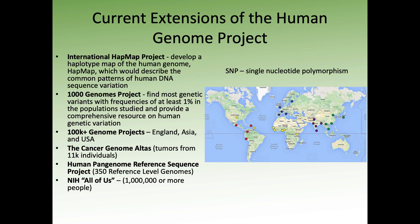Just because we got one reference genome sequence didn't stop work in human genomics. We then went on a series of follow-up projects. The International HapMap Project looked at single nucleotide polymorphisms and DNA sequence variation among different regions of the world. Various genome projects like the Thousand Genomes Project tried to get broader samples of genetic variation in populations to better understand the breadth of human genetic variation.